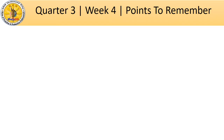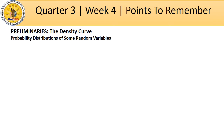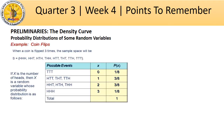Let us begin by studying what a density curve is. Let's take a look at the probability distribution of some random variables. Example: coin flips. When a coin is flipped three times, the sample space will be S = {HHH}, meaning you get head on the first coin flip, head on the second, and head on the third. HHT stands for getting a head on the first flip, head on the second flip, and tail on the third flip.